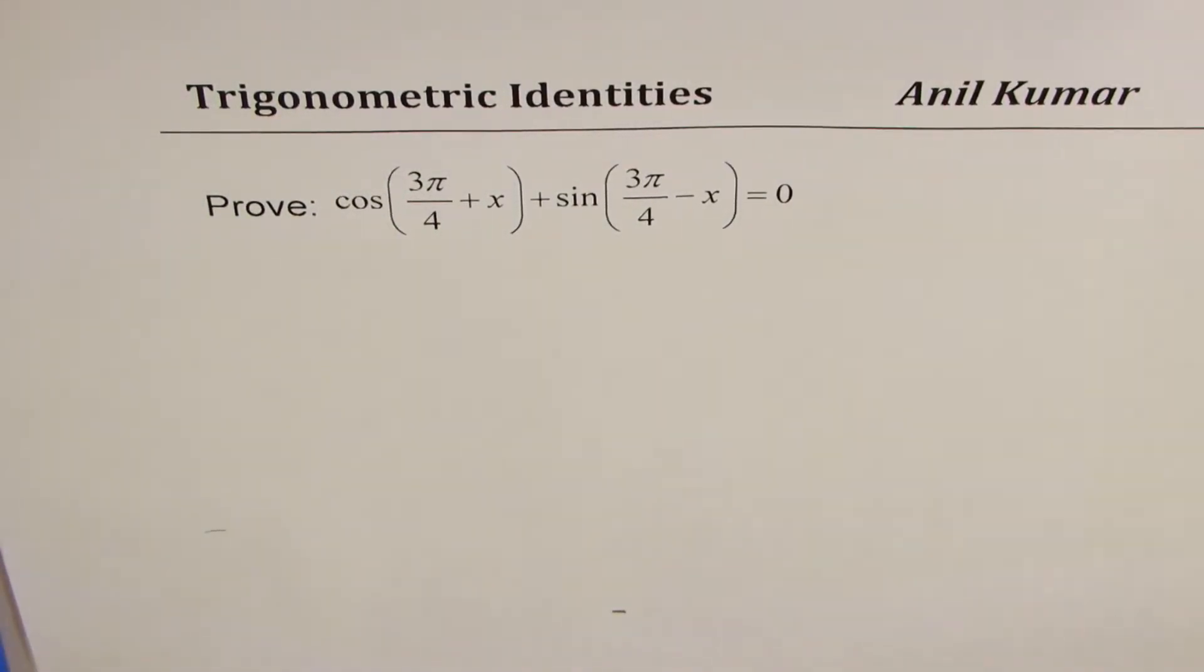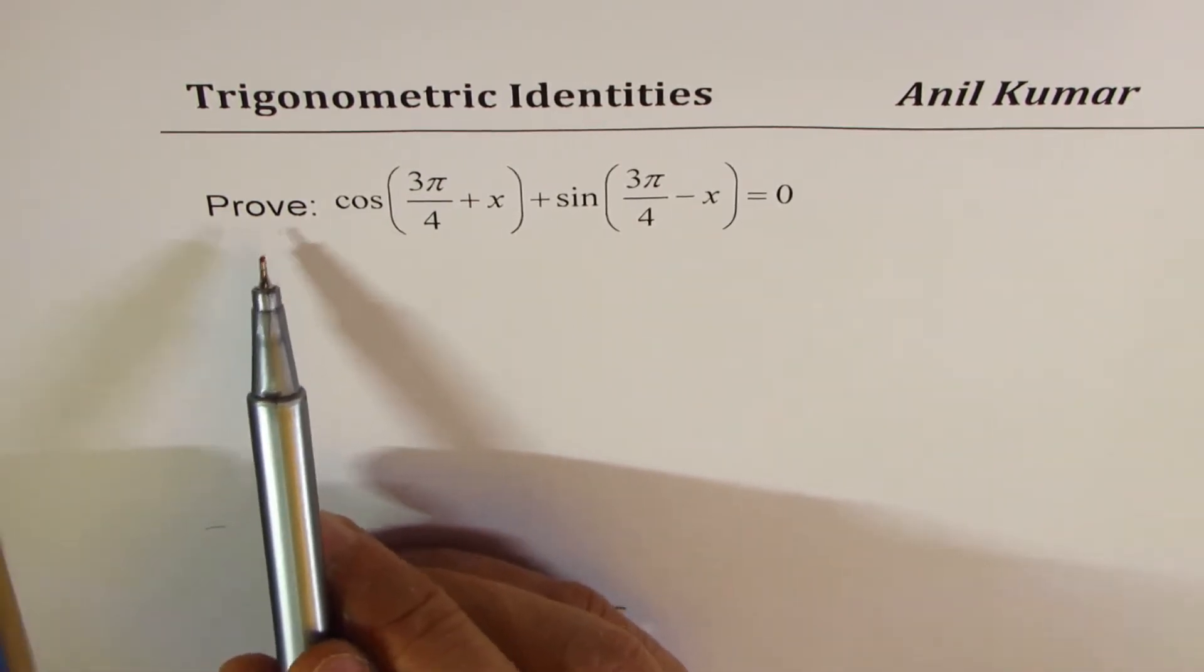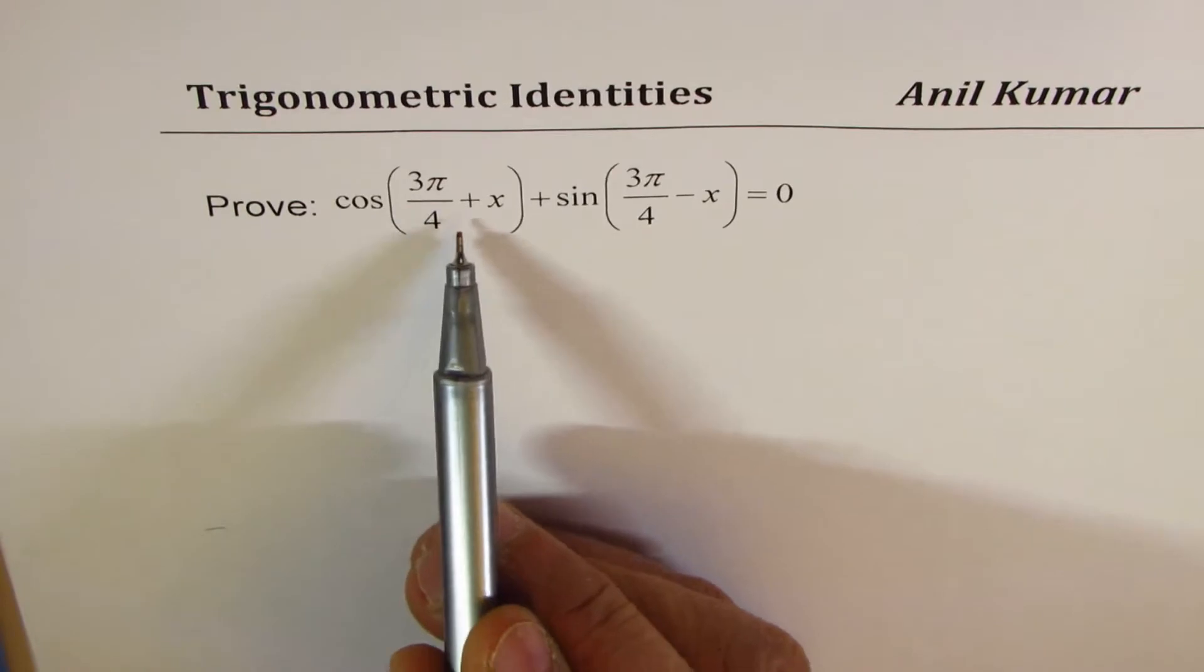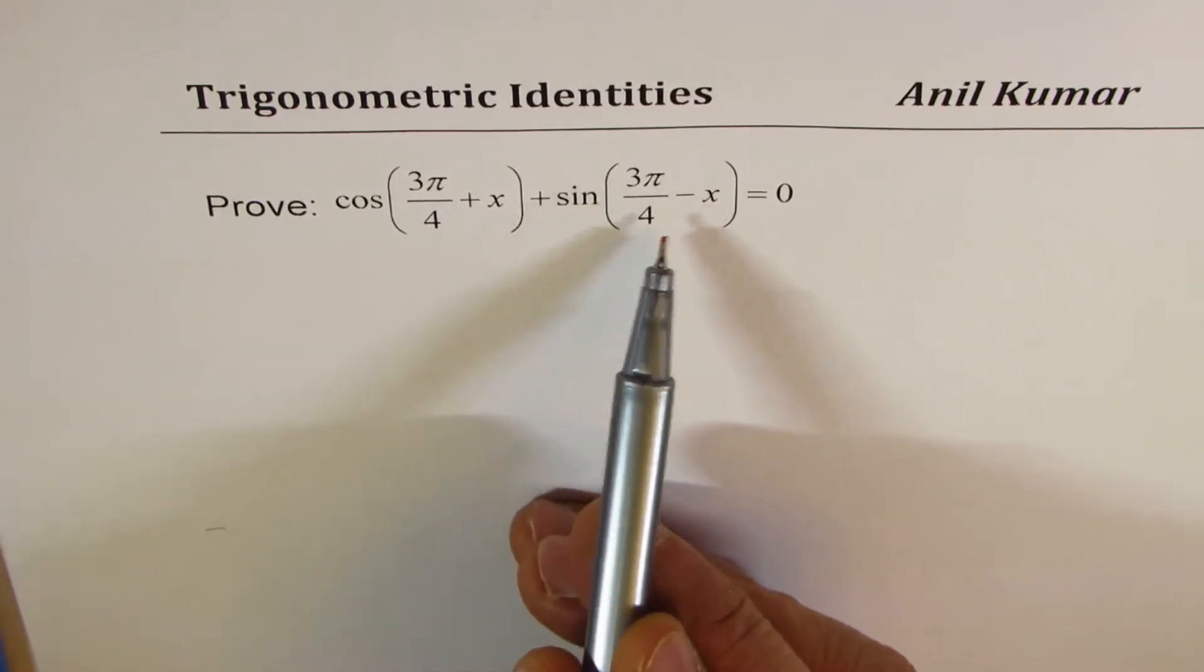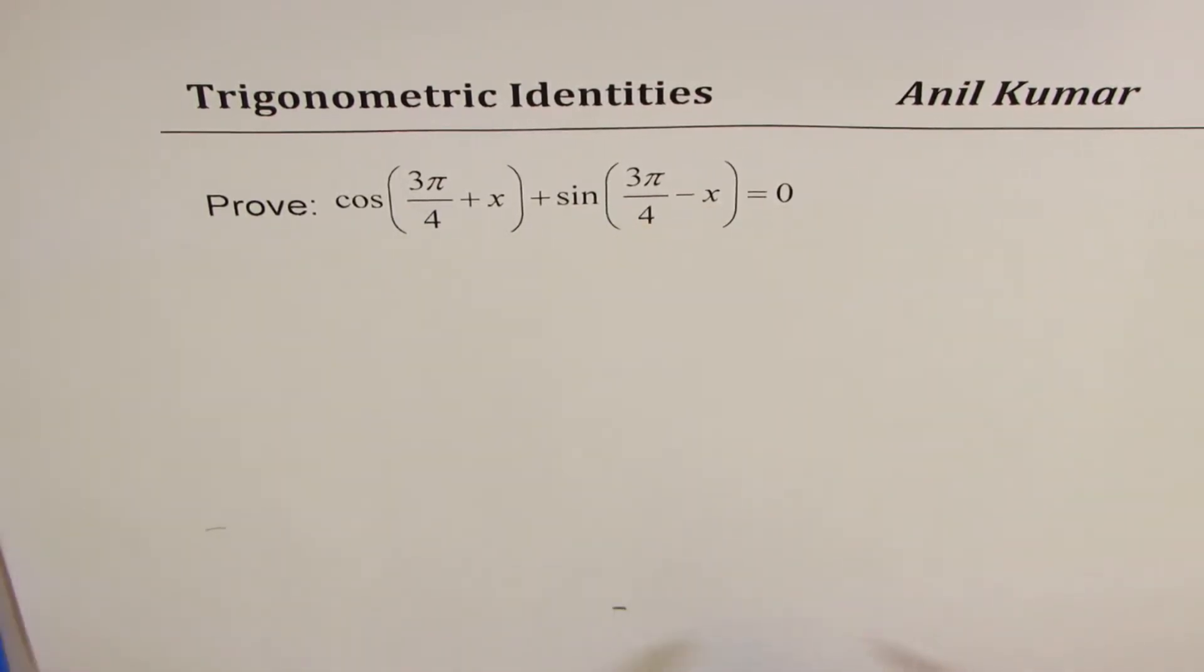I'm Anil Kumar. In this video, we will use sum and difference formulas to prove the identity: cos(3π/4 + x) + sin(3π/4 - x) = 0.